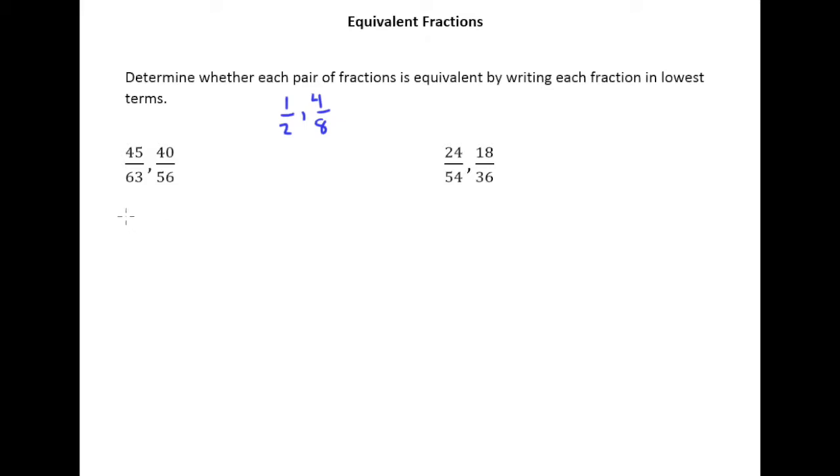So let's take 45 63rds and 40 56ths and write them both in lowest terms. So 45 63rds, well, let's see what goes into both the top and bottom evenly. Well, these are both multiples of 9, so I should be able to divide the top and bottom by 9. And when I do that, I get a 5 on top and a 7 on bottom.